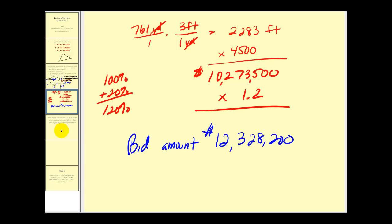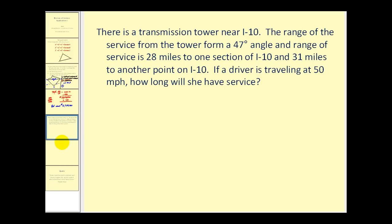Okay, we have time for one more application problem. There is a transmission tower near I-10. The range of the service from the tower forms a 47-degree angle and a range of 28 miles to one section of I-10 and 31 miles to another point on I-10. If a driver is traveling at 50 miles per hour, how long will she have service?